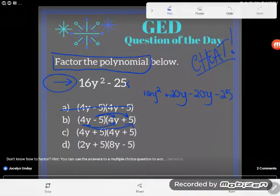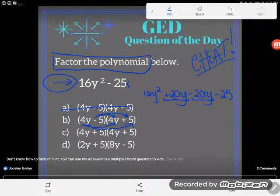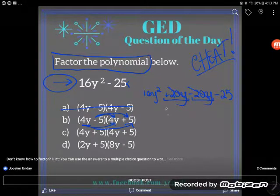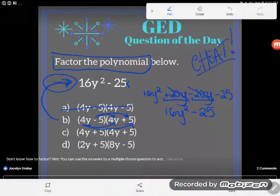Now something really cool happens here. I do have some like terms that I can combine. Positive 20y and negative 20y are opposites, and so they're actually going to zero out. And I end up with 16y squared minus 25. Take a look. Compare that to that. We can see that when I multiplied this out, I got back to there. Therefore, if I were to factor this out, I could get to there. And so this one checks.